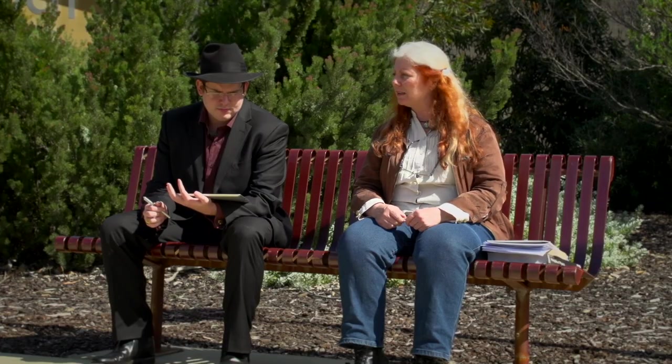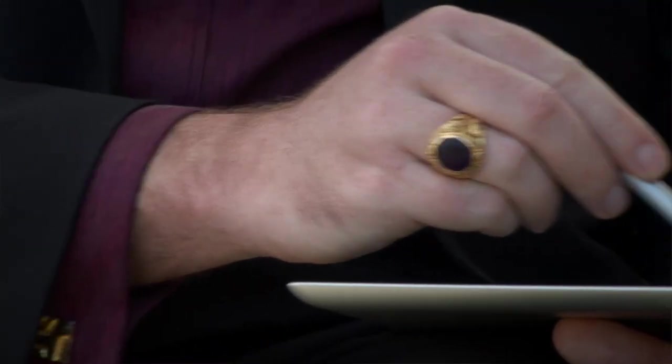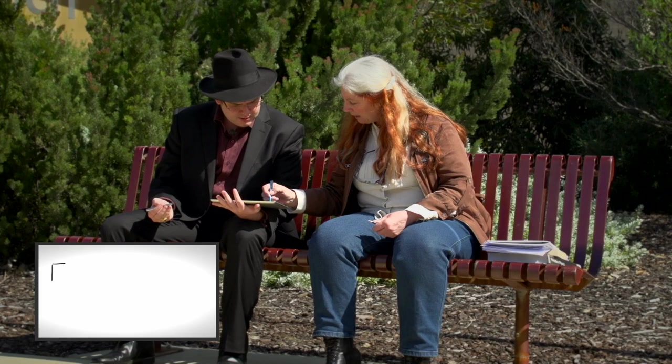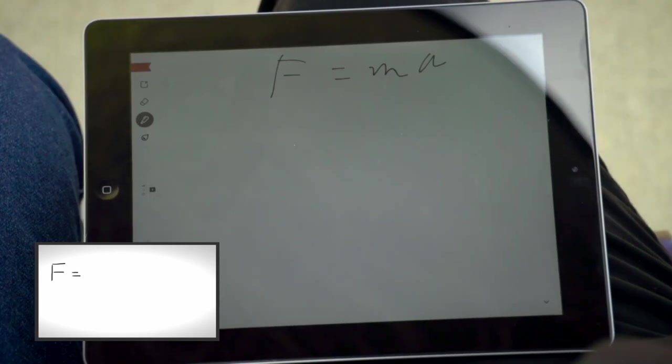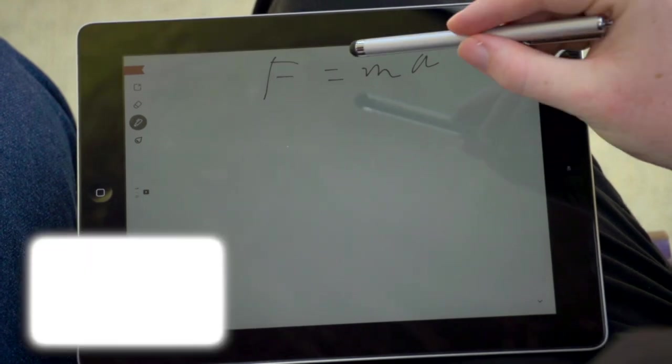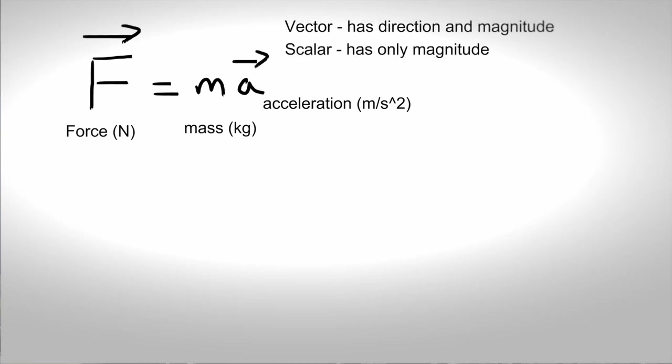Perhaps if we started with something like F equals ma. You've got your pad there. Let's draw with them. Okay so this F here is force and it's a vector and it's in units of newtons. M is mass and it's in kilograms and it's scalar. Acceleration which is in meters per second squared, it's also a vector.